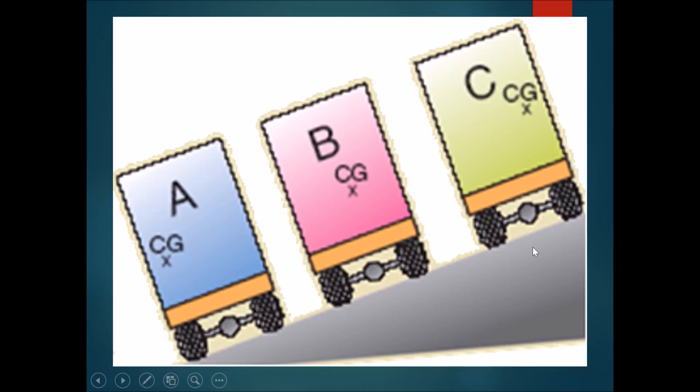So let's take a look at these three trucks. The trucks are parked on the slope and they have been packed with boxes or weights such that they have different positions of their center of gravity. Let's take a look and ask ourselves which of these trucks will fall.